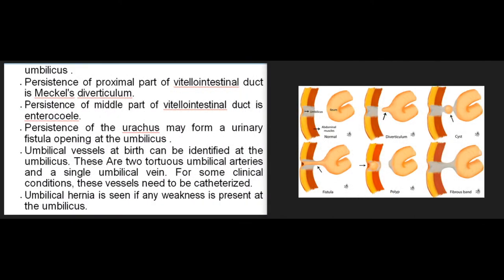Persistence of the proximal part of the vitelointestinal duct is Meckel's diverticulum. Persistence of the middle part of the vitelointestinal duct is enterocele. Persistence of the urachus may form a urinary fistula opening at the umbilicus. Umbilical vessels at birth can be identified at the umbilicus — two tortuous umbilical arteries and a single umbilical vein — and for some clinical conditions, these vessels need to be catheterized. Umbilical hernia is seen if any weakness is present at the umbilicus.